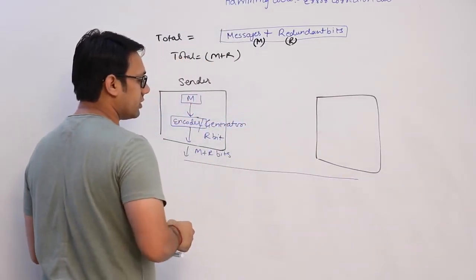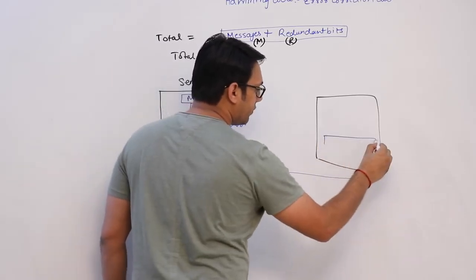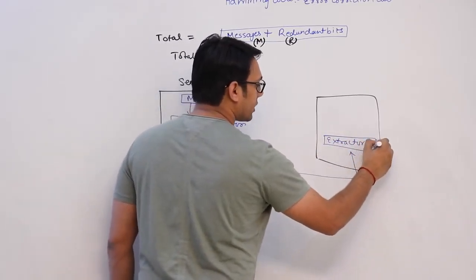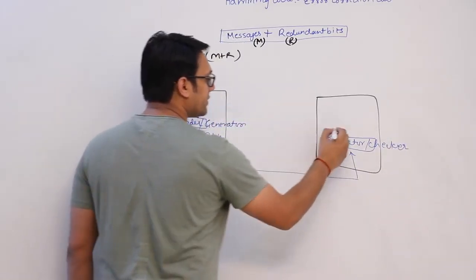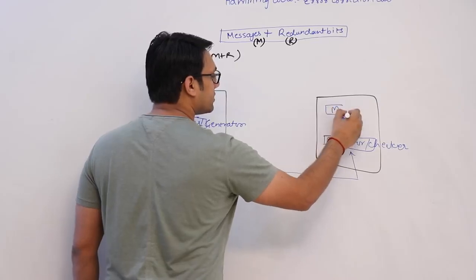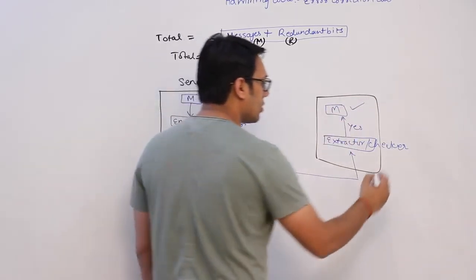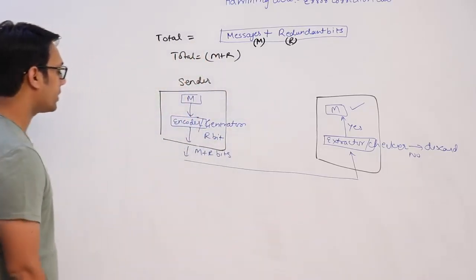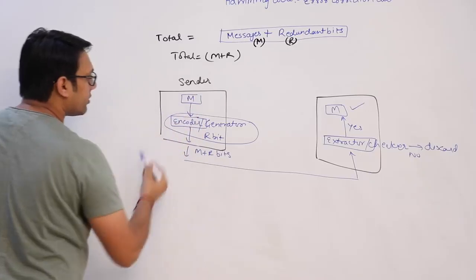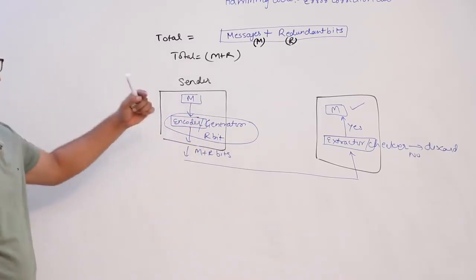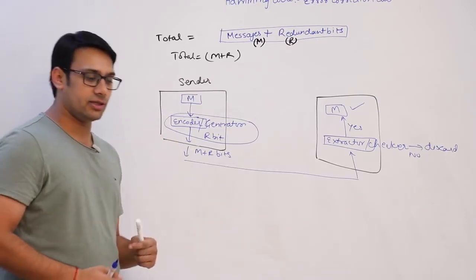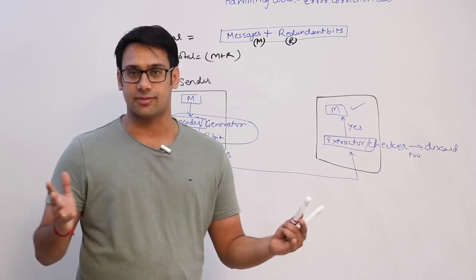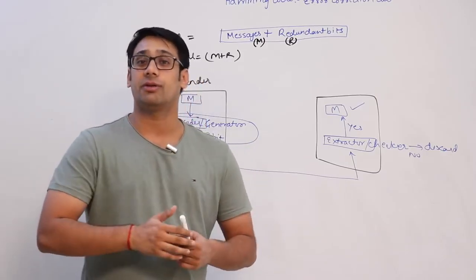At the receiver's end, a similar but reverse procedure takes place. The receiver will extract those r bits and check whether the message is correct. If correct, it extracts message m and receives it. If not correct, it discards the message and the sender has to retransmit. This generator is what we have to study in Hamming codes — how to generate Hamming codes for any message length.